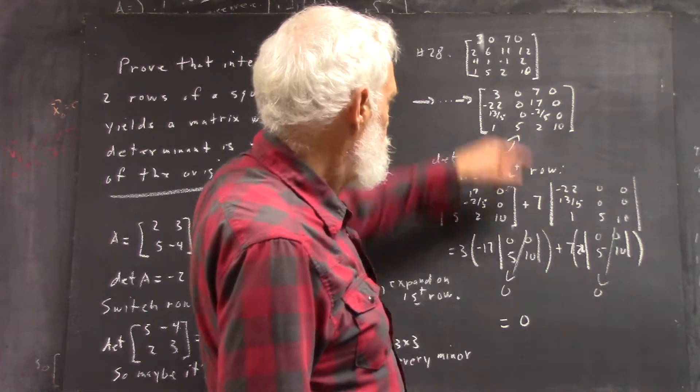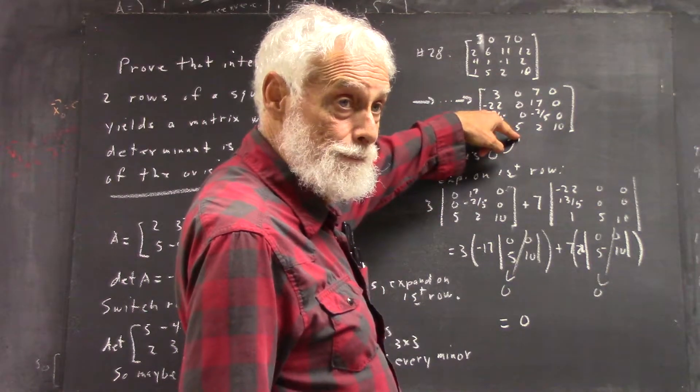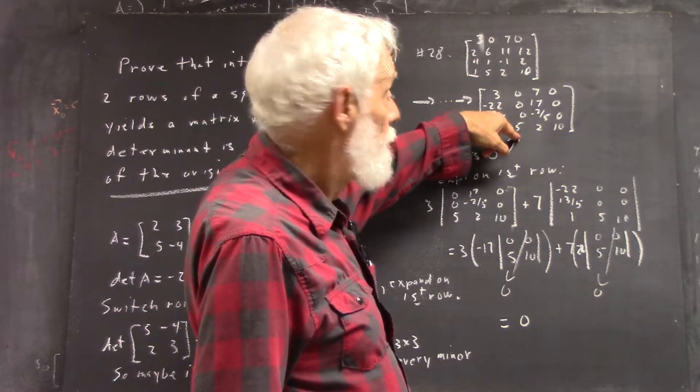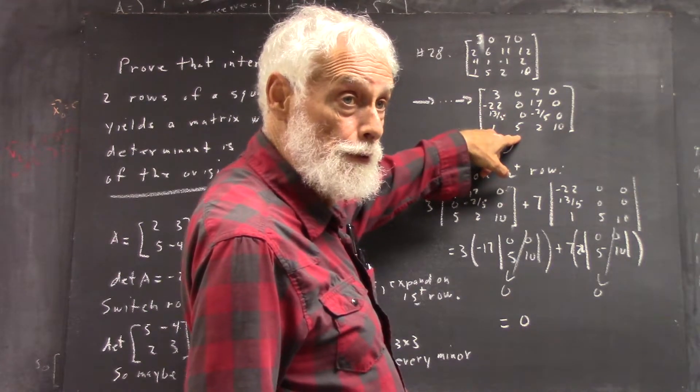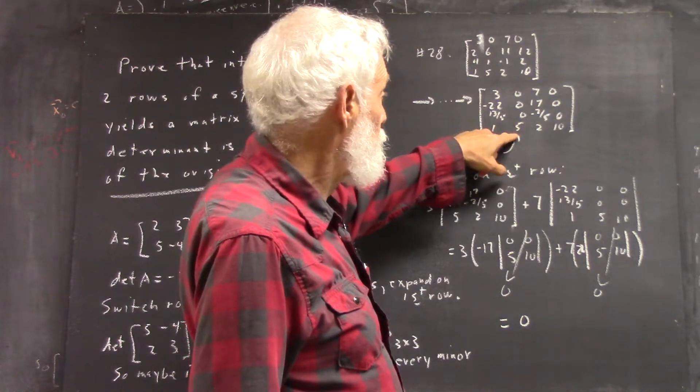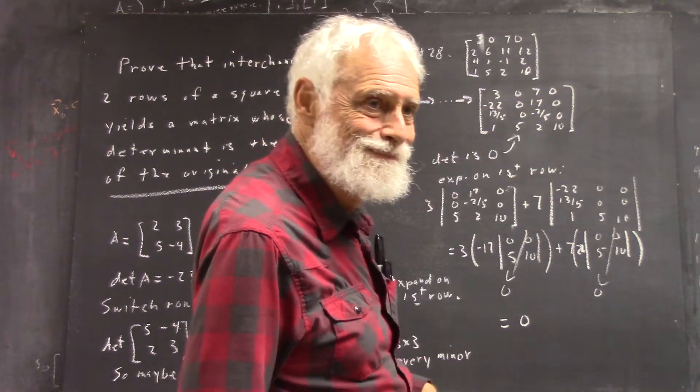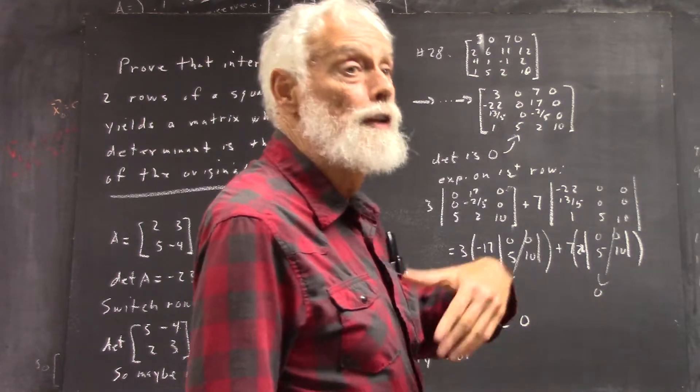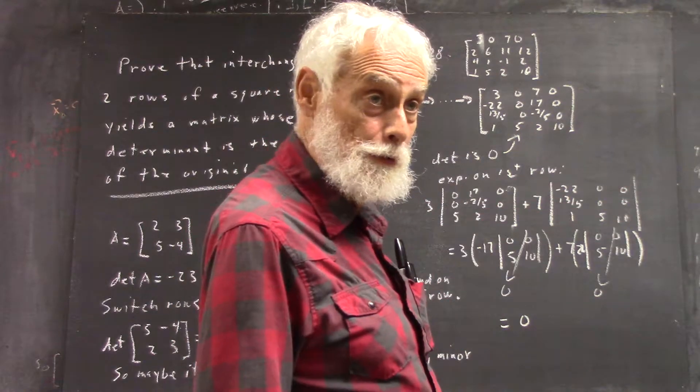Now I could equally well expand on the first column, and I'd have only one determinant - one three by three to do, right? And that three by three has a column of zeros. That's even easier - that's what I saw first.